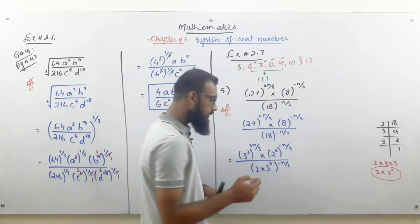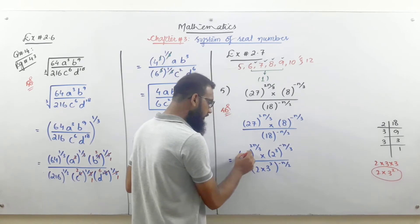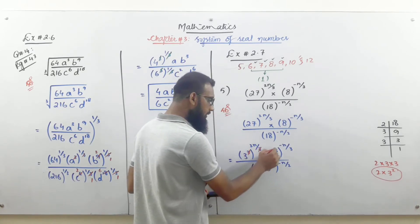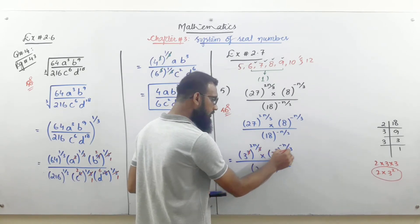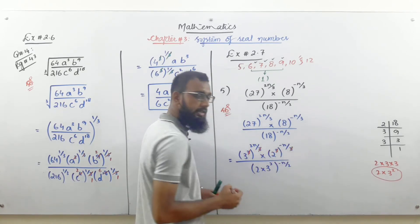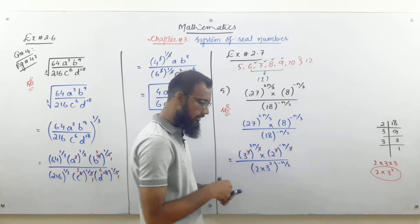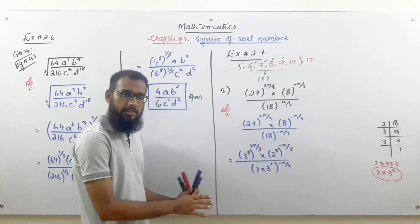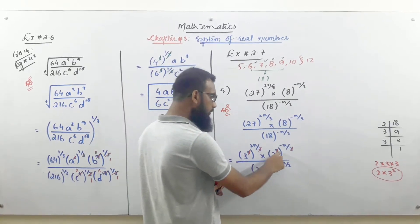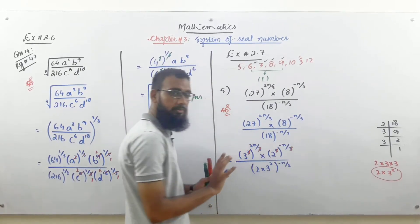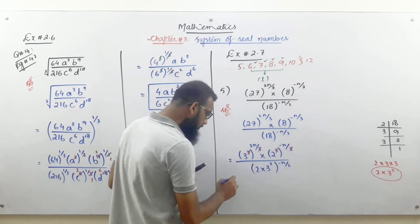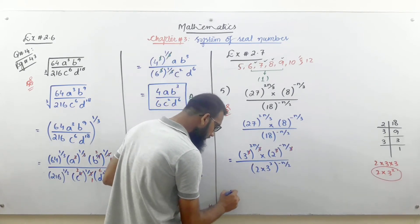Next step: the 3 in the numerator and the 3 in the denominator cancel. Numerator and denominator powers cancel, and we identify the remaining values after this cancellation.